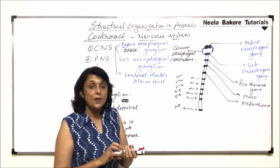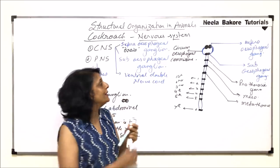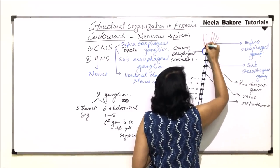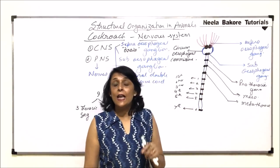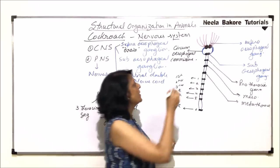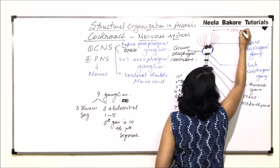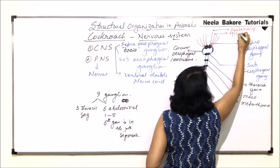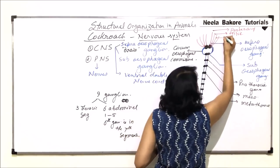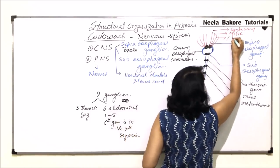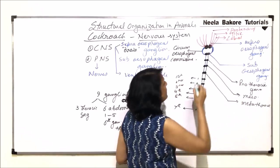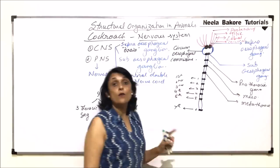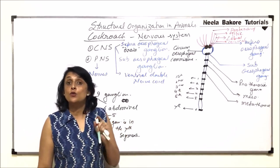From the supraesophageal ganglion arise four pairs of nerves. These nerves are named based on the structures they supply. The first is the antennary nerve, which supplies the antenna. The second is the optic nerve, which goes to the eye. The third is the labral nerve, going to the upper lip — the labrum. The fourth nerve goes to the neck region. These are the four important nerves arising from the supraesophageal ganglion.